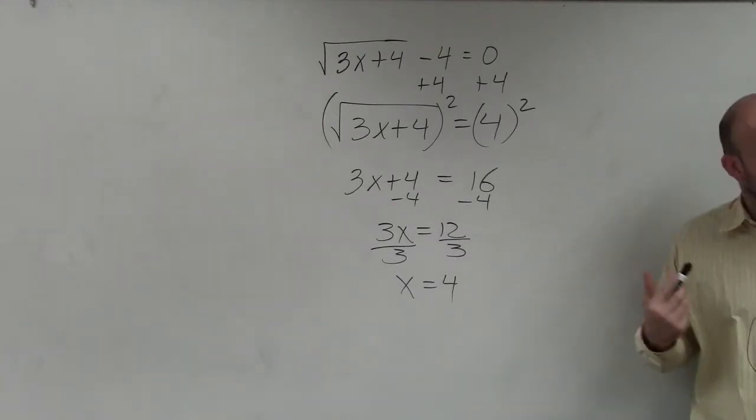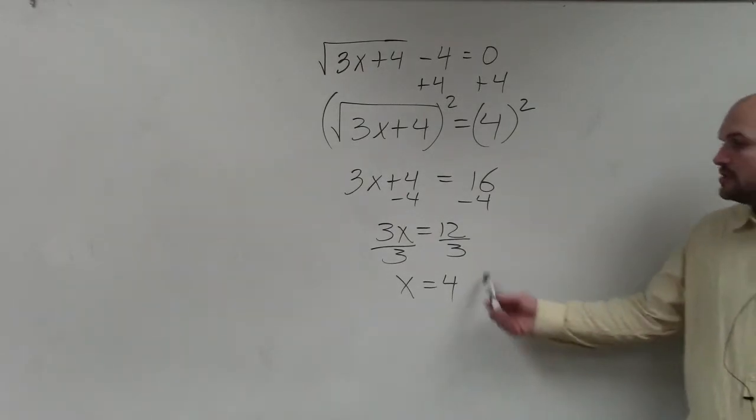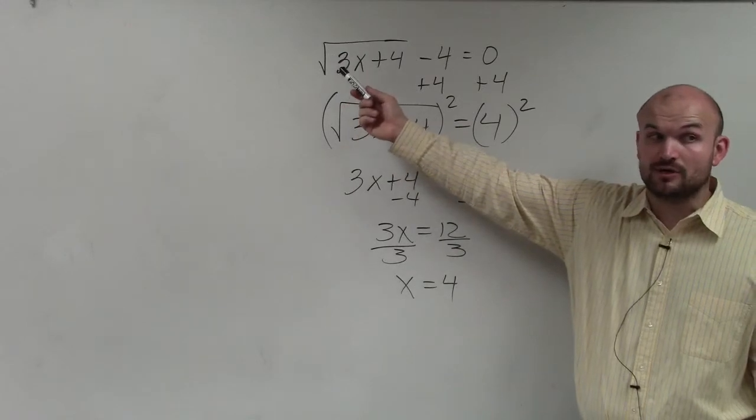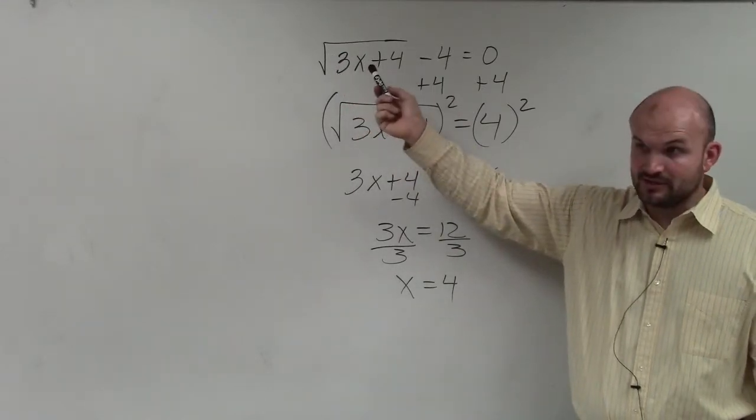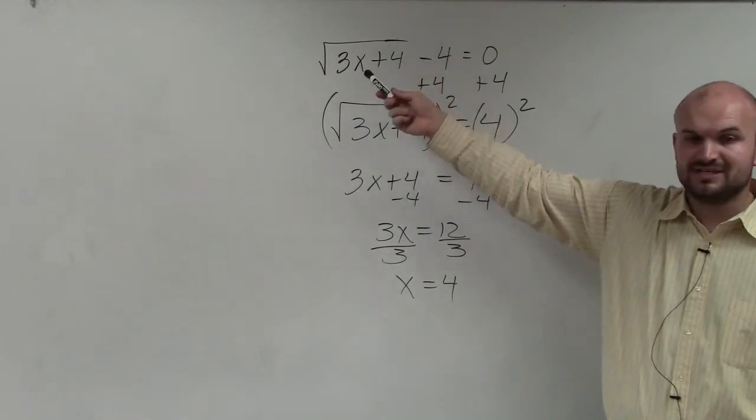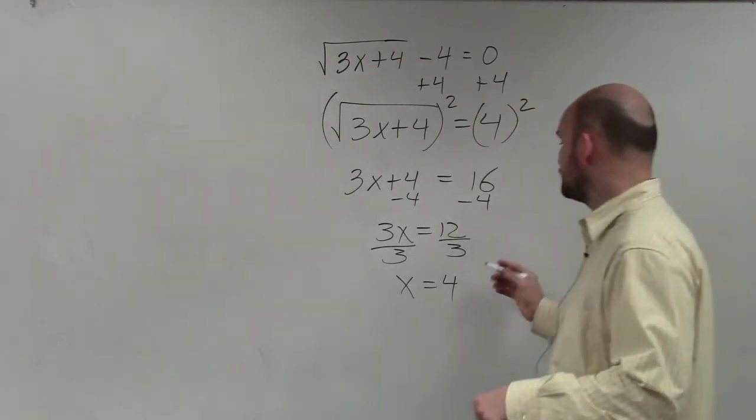Now the only difference, the only thing that's different with this is whenever I'm squaring both sides, guys, we have to make sure we check back with our solutions. So I'm going to take 4 and I'm going to plug it back in for x because there are going to be answers that aren't going to work. So it's really important that you guys do this. 3 times 4 is 12 plus 4 is 16. The square root of 16 is 4. 4 minus 4 is 0. So therefore, this one works.